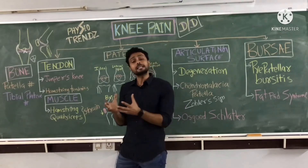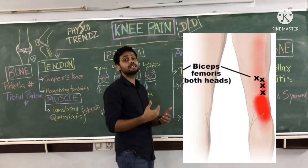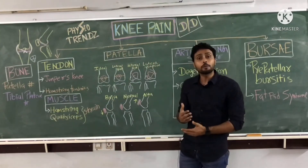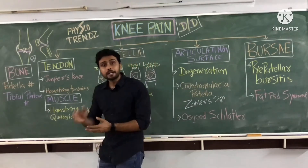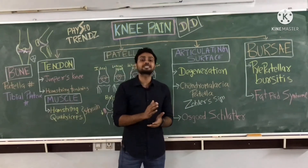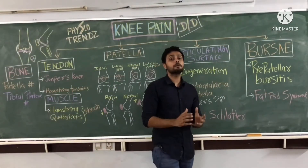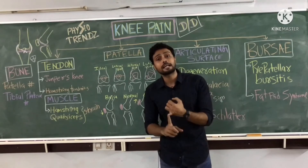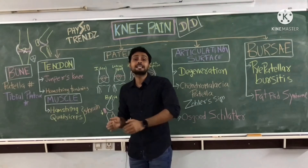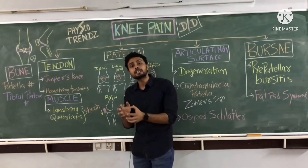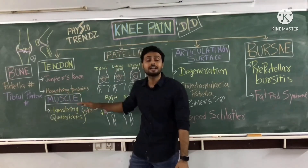The next condition is hamstring tendonitis, which is very common in sports people and athletes due to a sudden jerk to the hamstring tendons or repetitive injuries to the hamstring muscles. This condition can be identified through general assessment using active and passive movements. Additionally, taking the patient's history — whether there is any trauma or repetitive sports-related injury — gives a confirmed diagnosis of hamstring tendonitis.